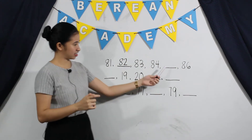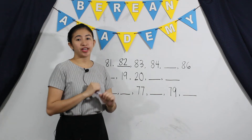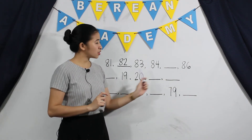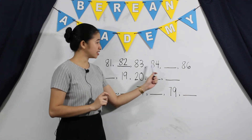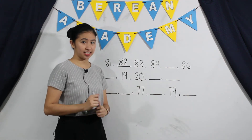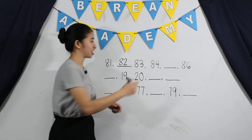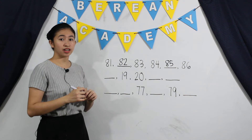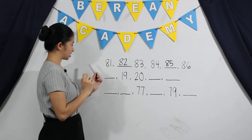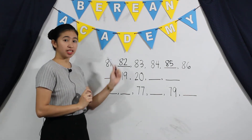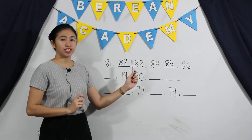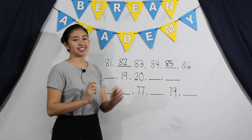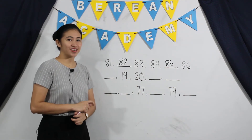And here, to find out, we have to identify the number between 84 and 86. So what number is between 84 and 86? It is the number 85. So to check, we are going to count up. Let's count: 81, 82, 83, 84, 85, 86. So it is correct.